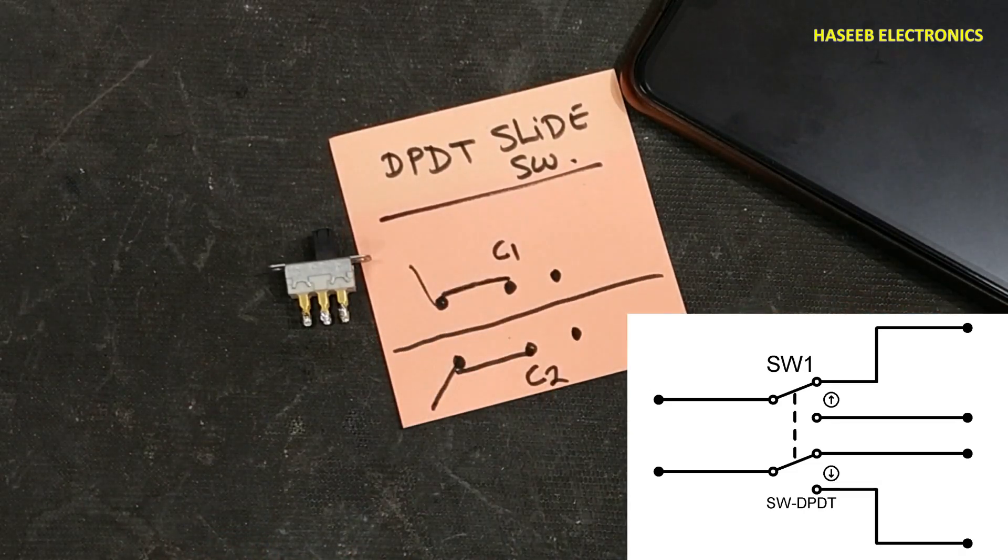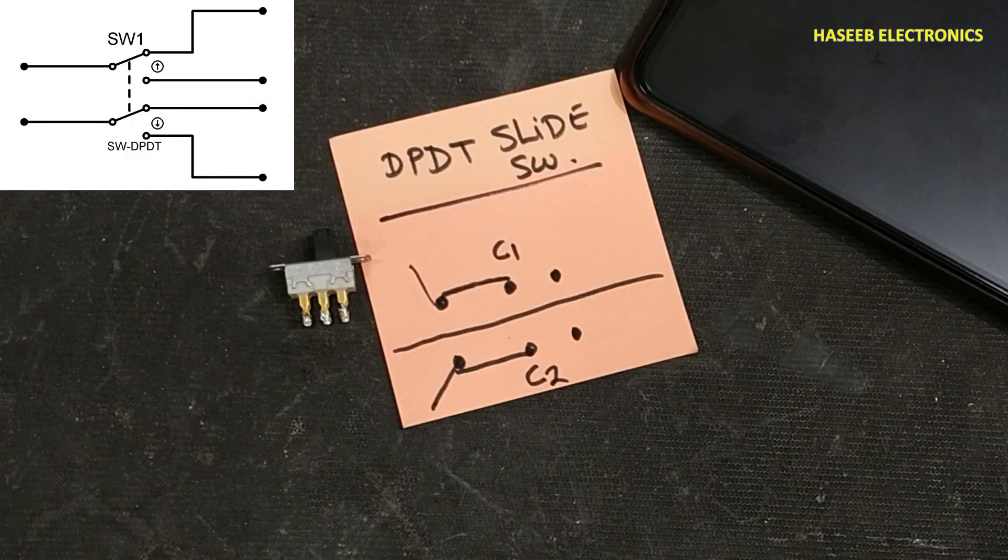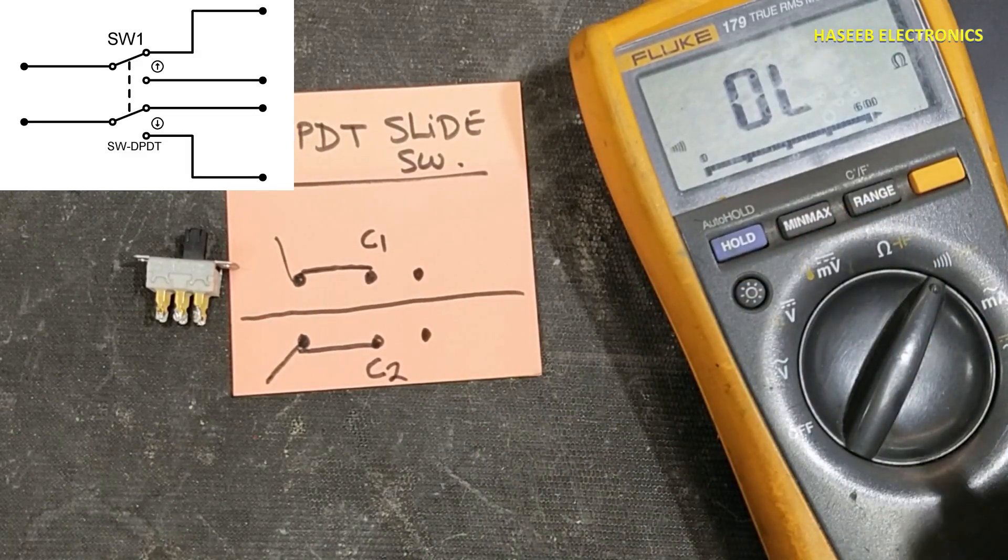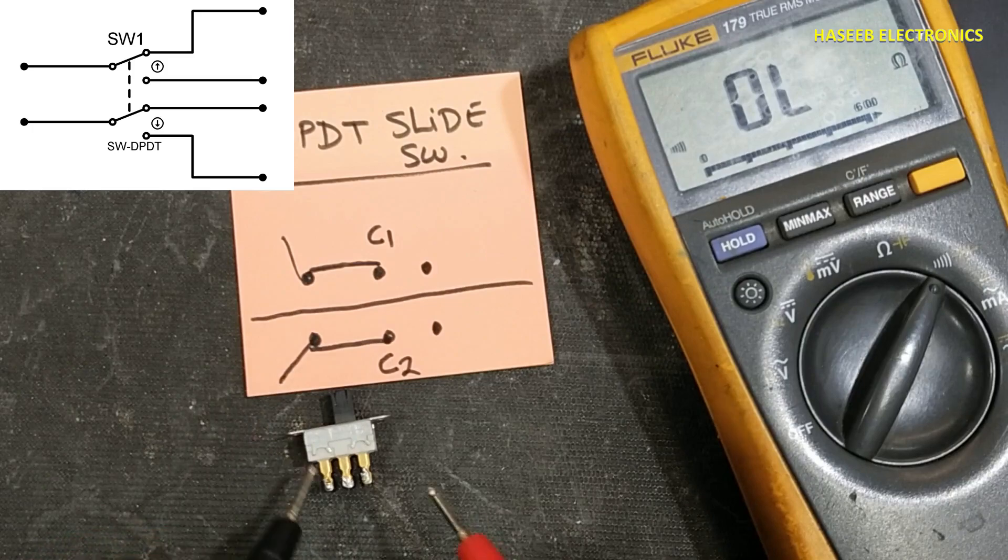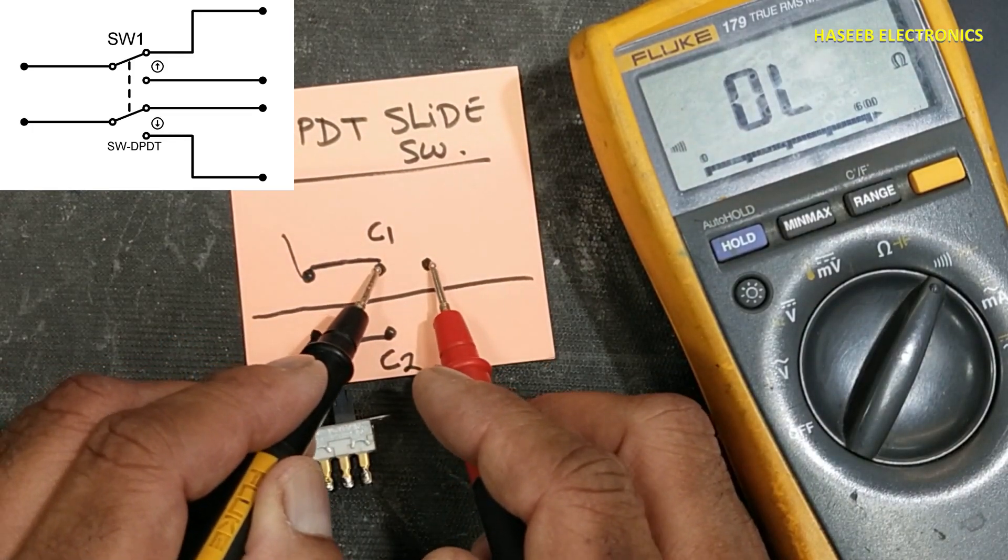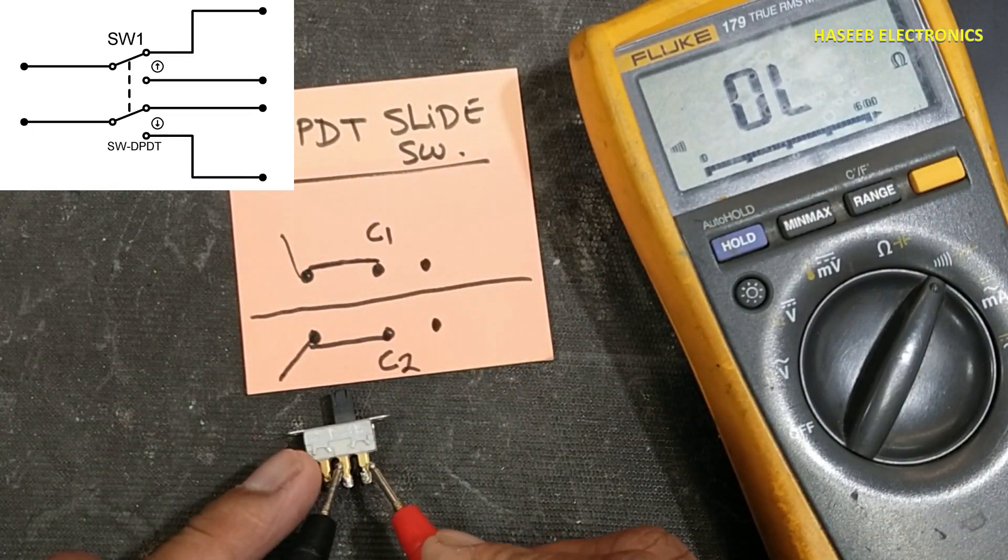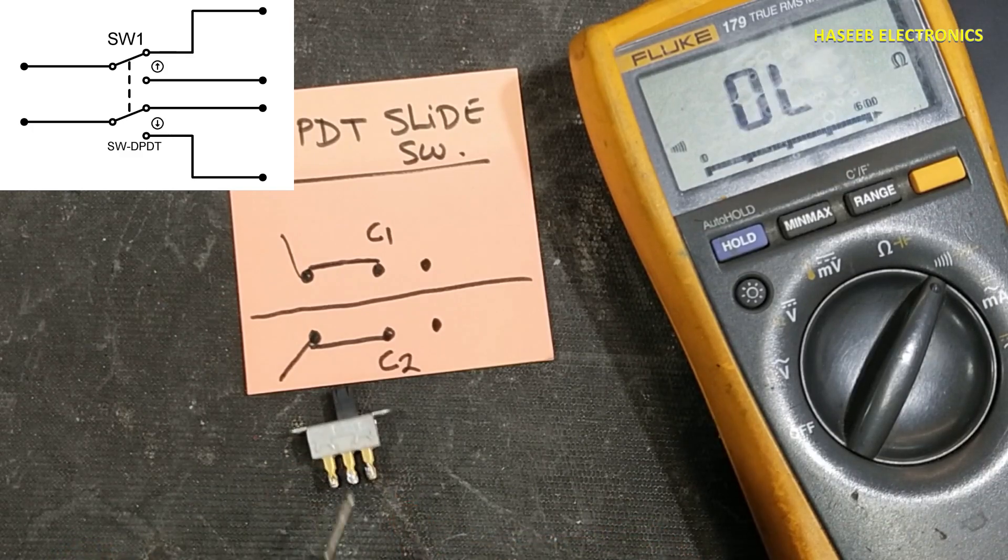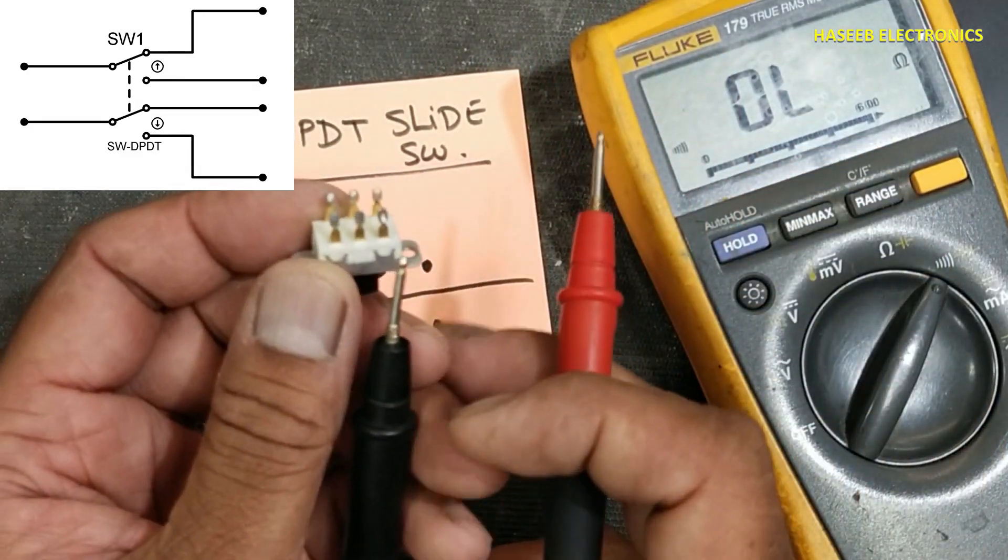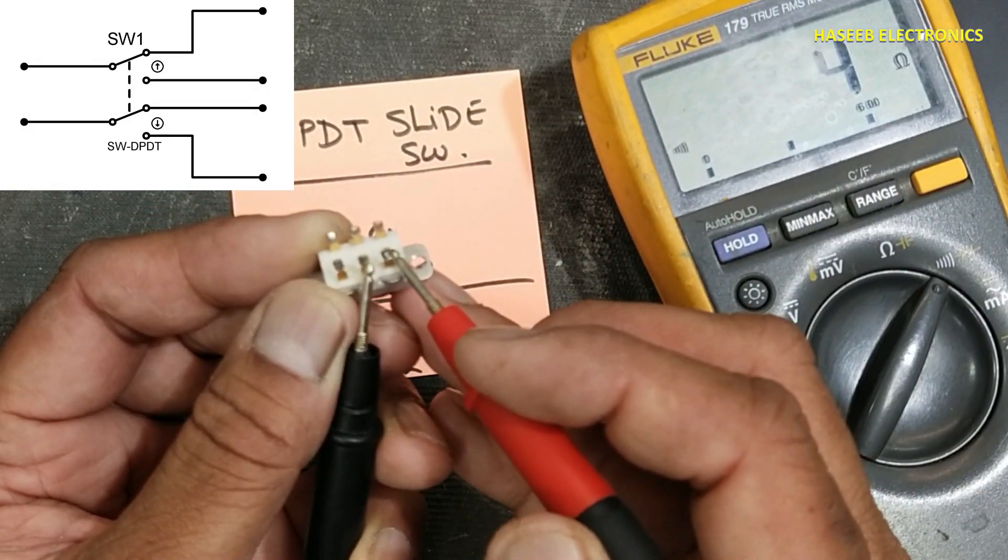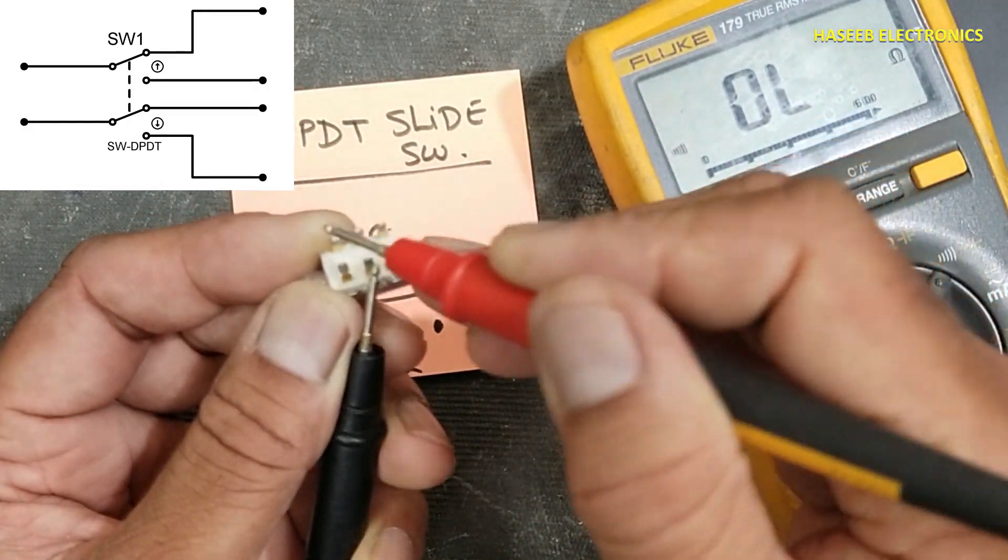Let's test it. Set multimeter to continuity. In this condition, it will make connection between these two points, and the same here. But it doesn't have any connection with the other one.